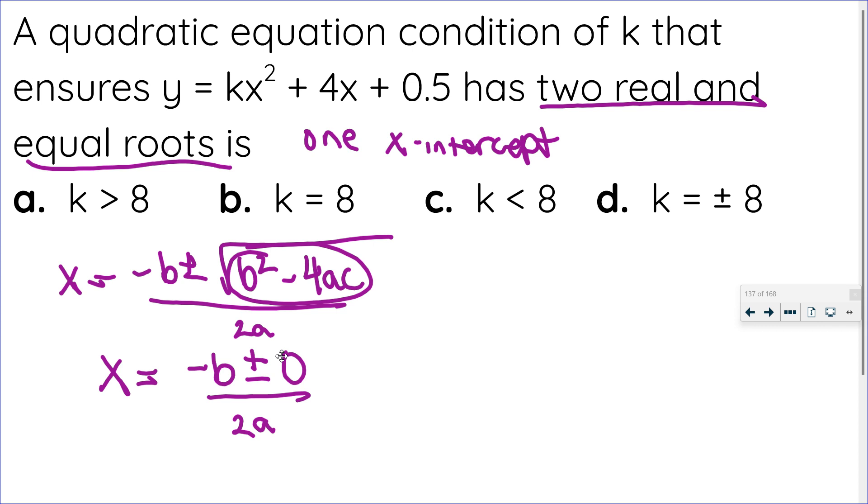Well, the only number that you can do that for is 0. So that means that my discriminant must be 0. Because if I have negative b plus 0, that's negative b. If I have negative b minus 0, that's also negative b. So now I know this means my discriminant must equal 0.